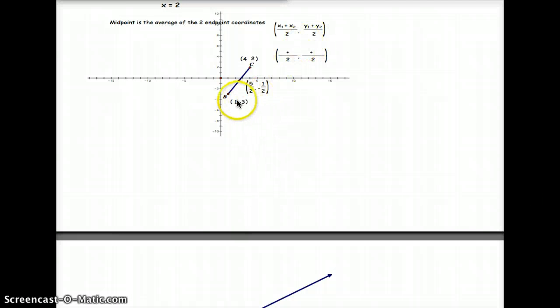So here, if B is located at 1 negative 3, 1 over negative 3 down, and C is located at 4 over 2 up, you plug that into the equation here.